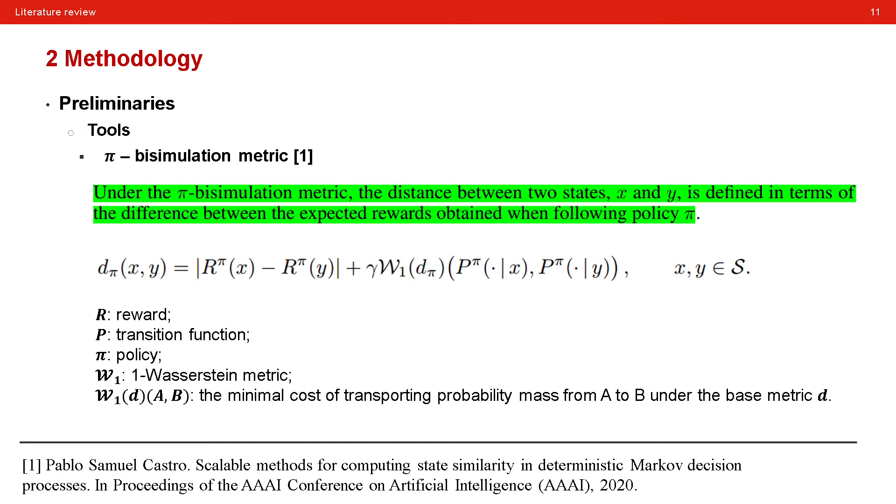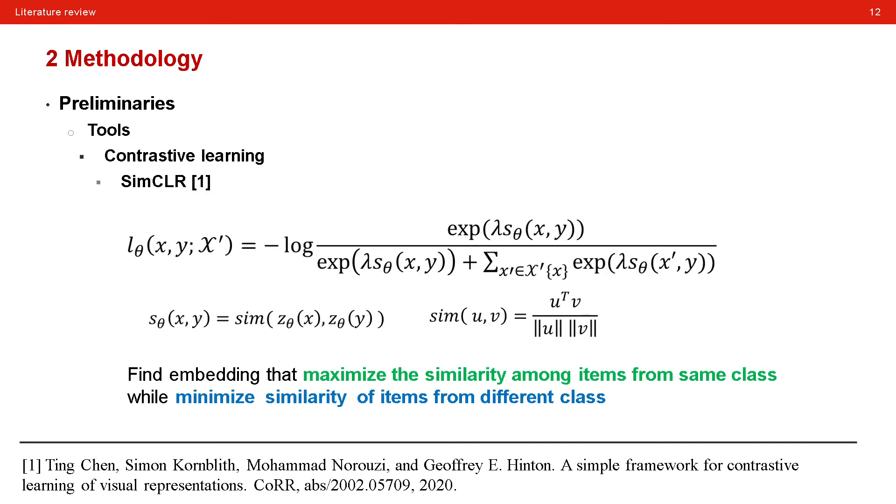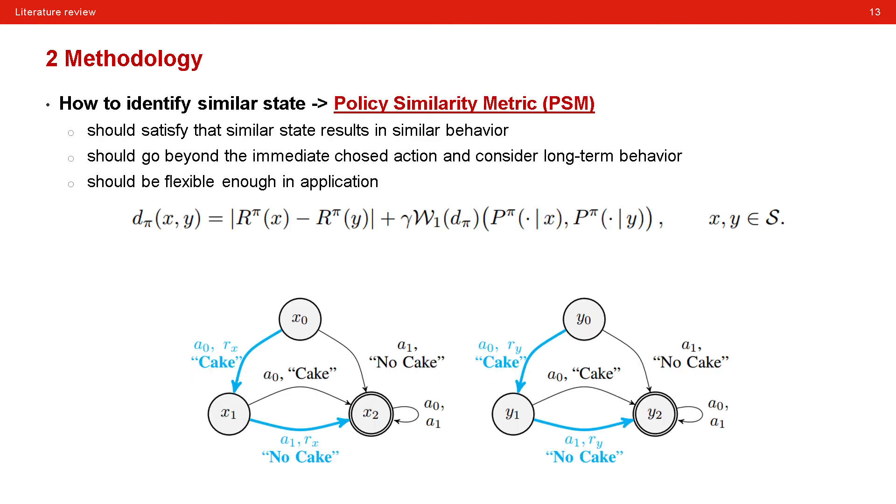And the probability distribution they consider here is the next state distribution starting from the state x or state y. And the second tool is contrastive learning. For any two states x and y, we can highlight the similarity or dissimilarity of x to y through comparison of x with other states sampled. Through contrastive learning, we can find the embedding that maximizes the similarity among items from the same class while minimizing the similarity of items from different classes.